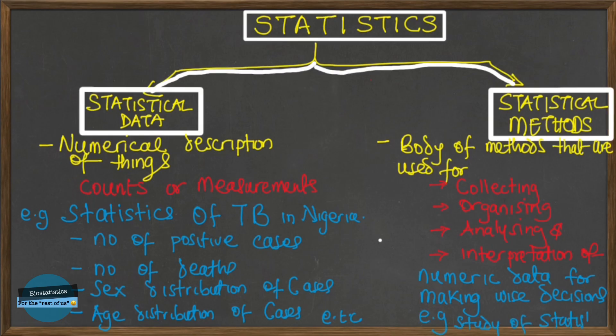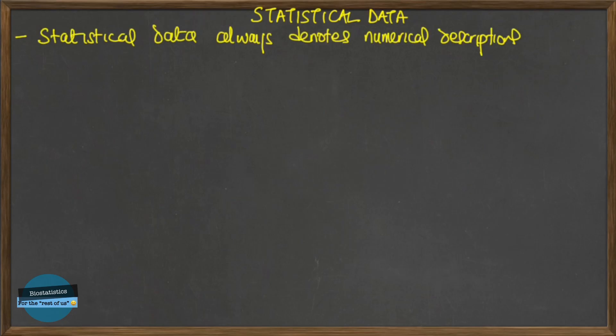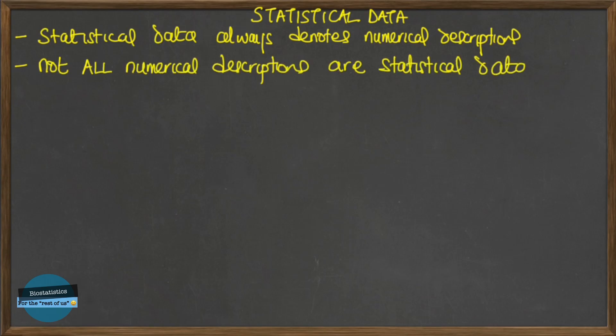For example, we say the study of statistics — a student studied statistics as a science, or a teacher teaches statistics. Now, when we talk about statistical data, even though statistical data refers to numerical description of things, not all numerical descriptions can be regarded as statistics. Statistical data always denotes numerical descriptions, but not all numerical descriptions can be said to be statistics. For numerical descriptions to be regarded as statistics, they must possess seven main characteristics.